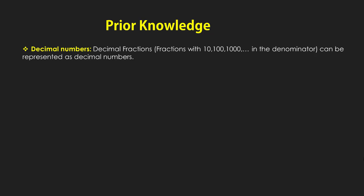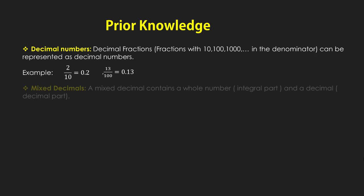For example, two upon ten is represented and read as 0.2. Thirteen upon hundred is written and read as 0.13. A mixed decimal contains a whole number — that is the integral part — and a decimal — that is the decimal part.